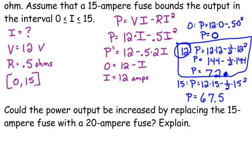Let's ask this question here. Could the power output be increased by replacing the 15 ampere fuse with a 20 amp fuse? Well, what does that affect in our problem? Where was the 15 amp? It was talked about right here. The fuse bounds the output in the interval. Our current can only be from 0 to 15. Well, if we replace that with a 20 amp fuse, that means our current can range from 0 to 20.